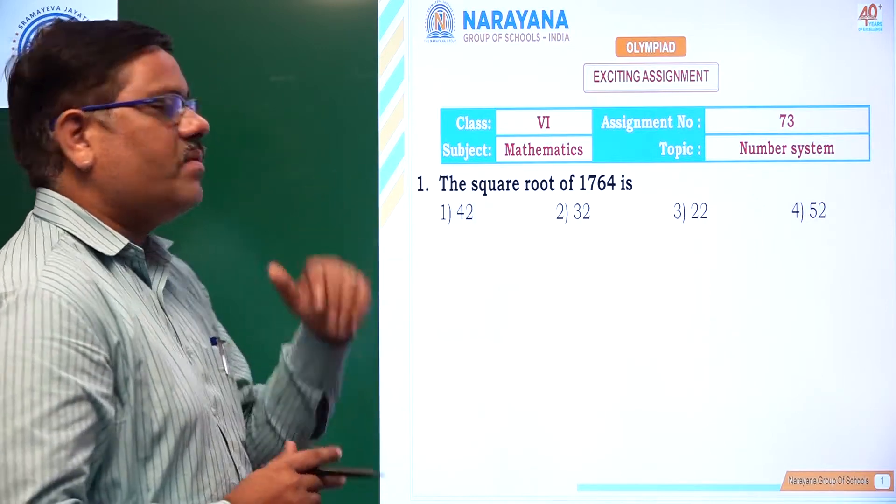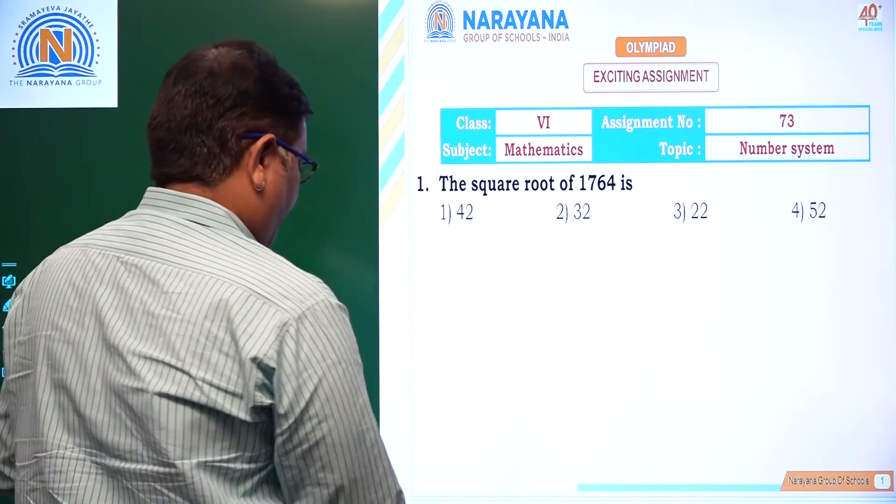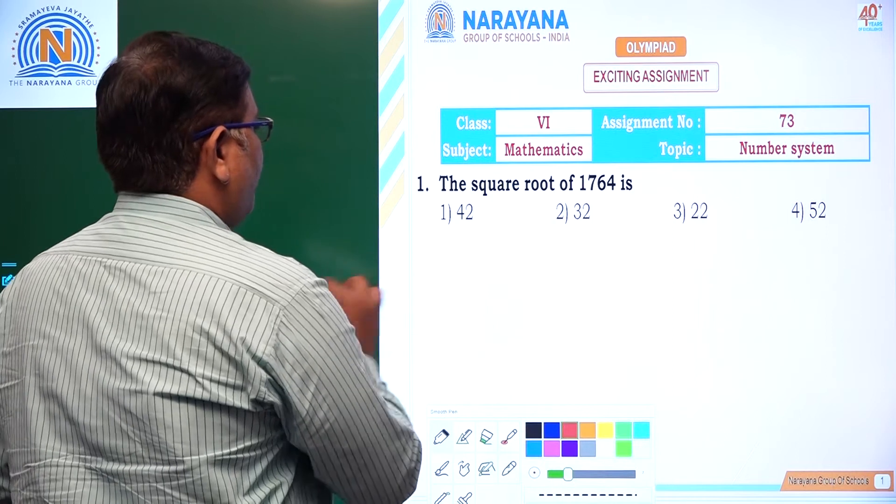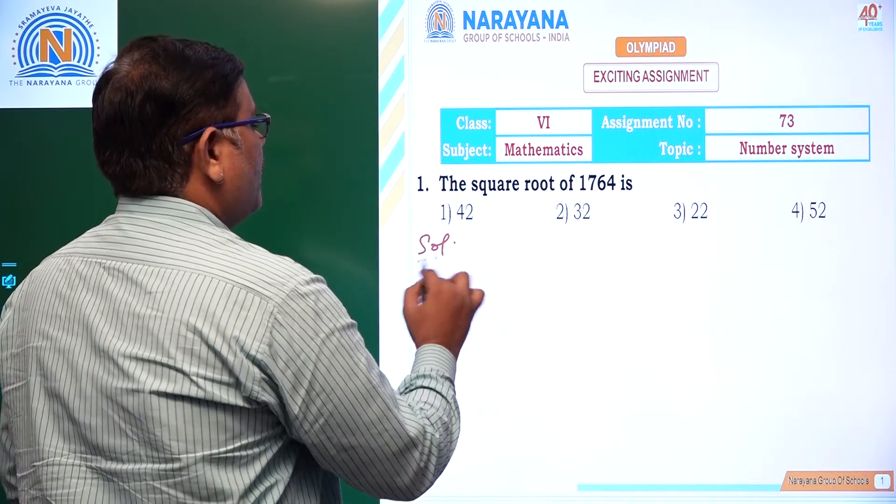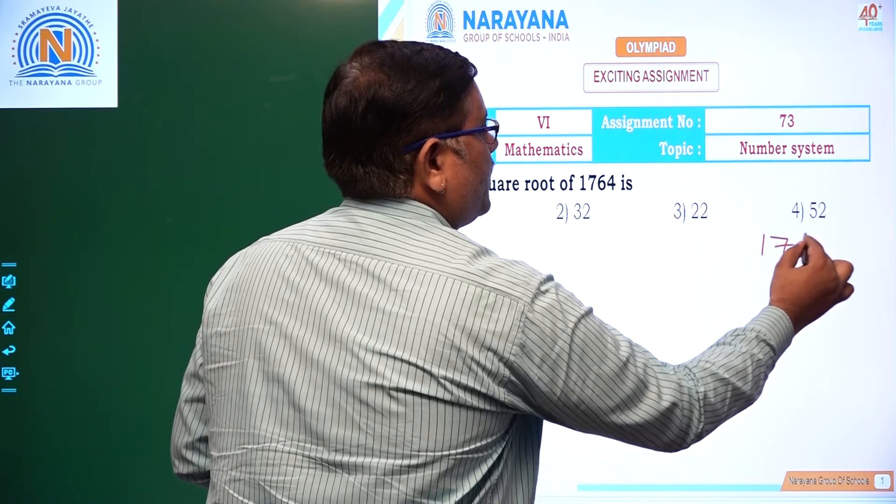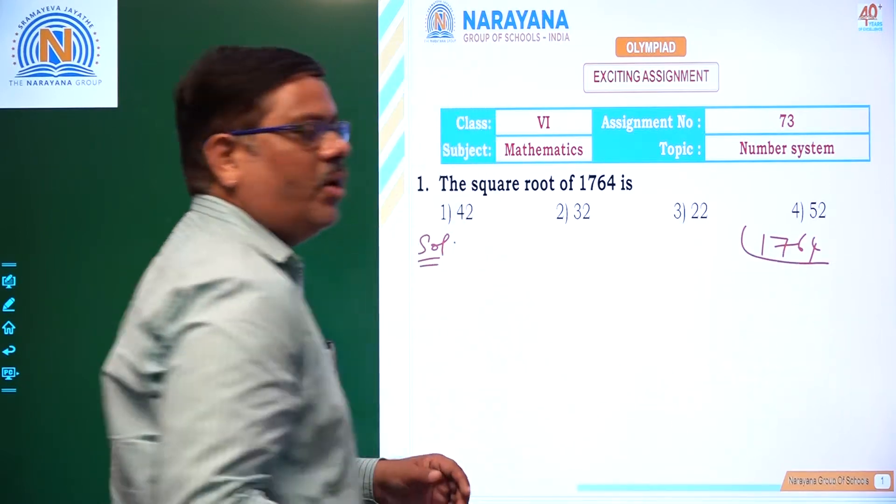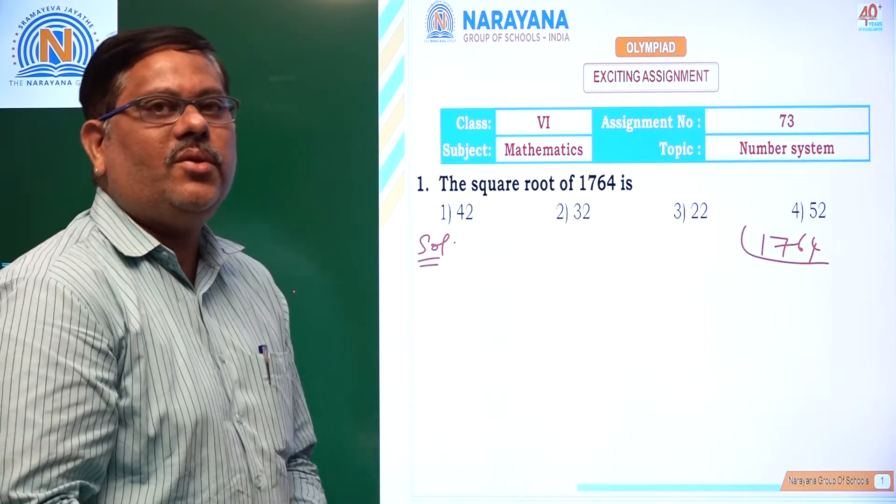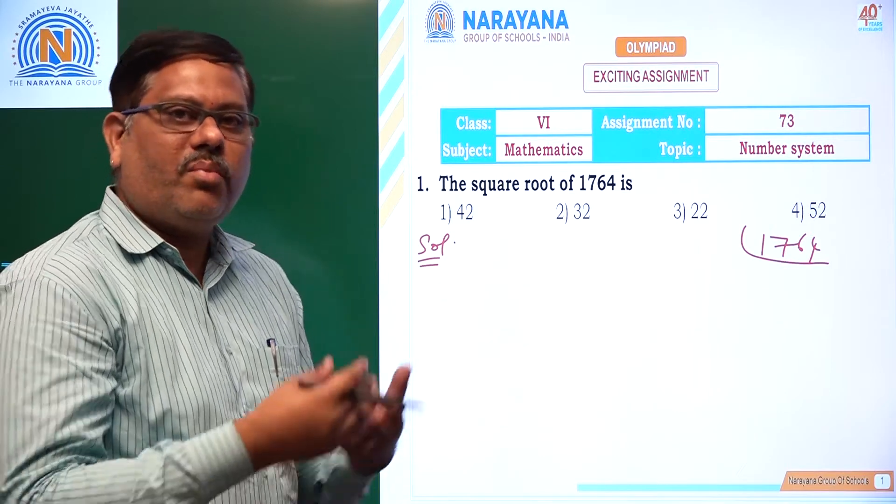Let us start with the first question, the square root of 1764 is. If we take 1764, let us try to write it in its standard form. To write it in standard form, you have to convert it into product of primes. You have to prime factorize.